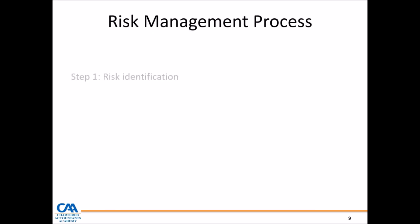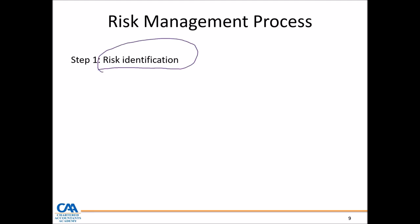Risk management process — how does this work? Risk management must be an integral part of how a business is run and managed. The first step is we need to have processes and procedures that allow the business to identify risks. Step one, even from an examination perspective, is one of the most important steps — from the information provided, are you able to identify any risks arising? There are tools that can be used to enable businesses to identify risks.